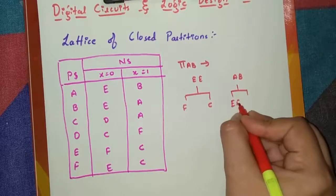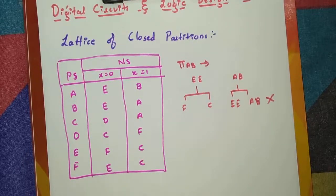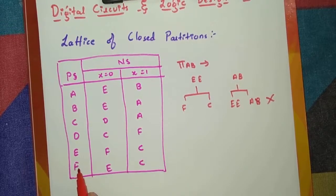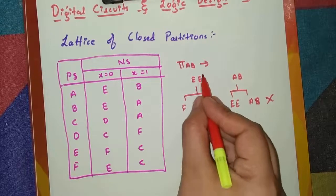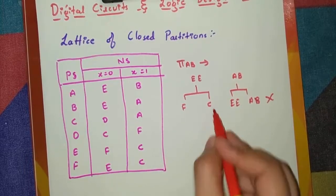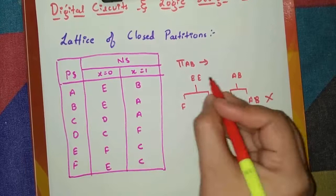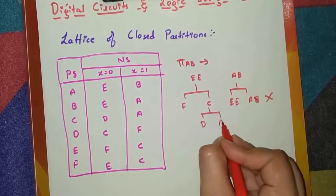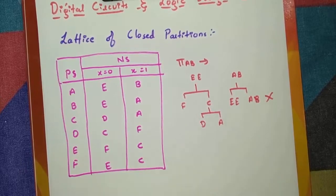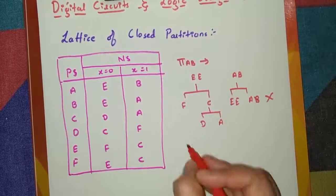Now go to A, B — the next states are E, E and A, B, which are the same states we already have, so just ignore this part. Next go to F — in F the next states are E and C. Check if they are already present: yes, E is present here and C is present here, so stop the branch here. Now go to C — the next states are D and A.